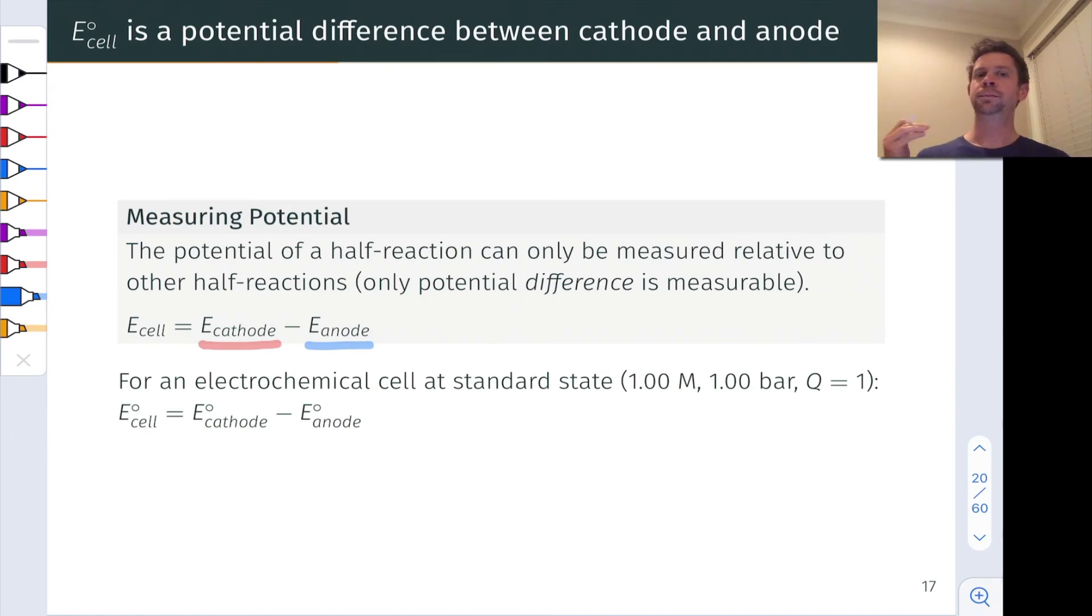Now this potential difference depends on the concentrations of aqueous species in the galvanic cell as well as the temperature and some other experimental variables. And so we define the standard state for a galvanic cell as one in which all the aqueous components have a concentration of one mole per liter, any gases involved, and yes gases can be involved in galvanic cells, have a pressure of one atmosphere or one bar, kind of depending on who you ask.